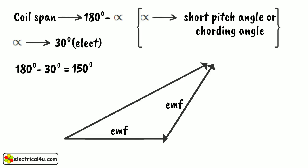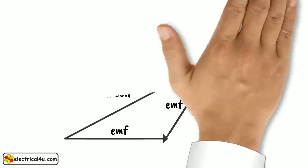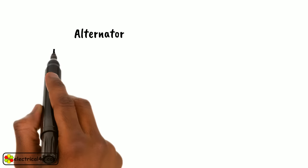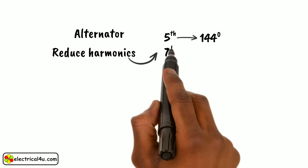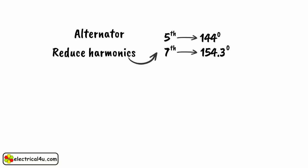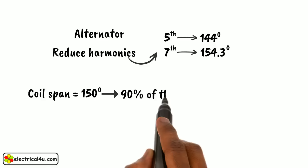In case of short pitch winding, the resultant EMF is the phasor sum of the two EMFs induced in the coil sides, and it is always less than the EMF induced in a full pitched coil. Short pitched winding is used in electrical machines, especially in alternators, to reduce harmonics. For example, to eliminate the 5th harmonic the coil span must be 144 degrees, and to eliminate the 7th harmonic the coil span must be 154.3 degrees. In modern alternators, the coil span is chosen as 150 degrees, such that nearly 90% of the 5th and 7th harmonics can be eliminated simultaneously.